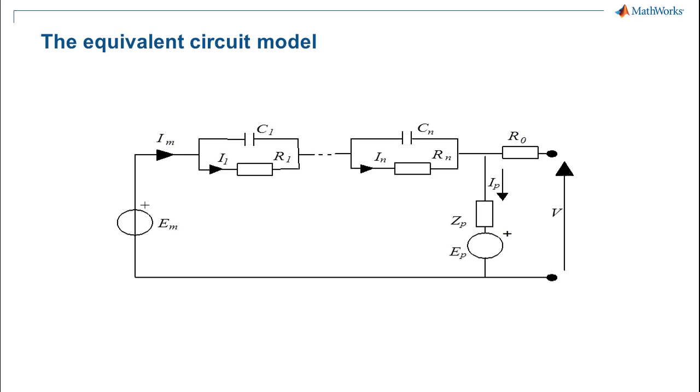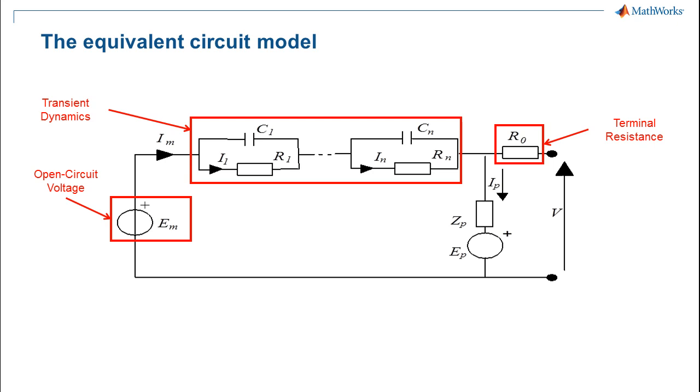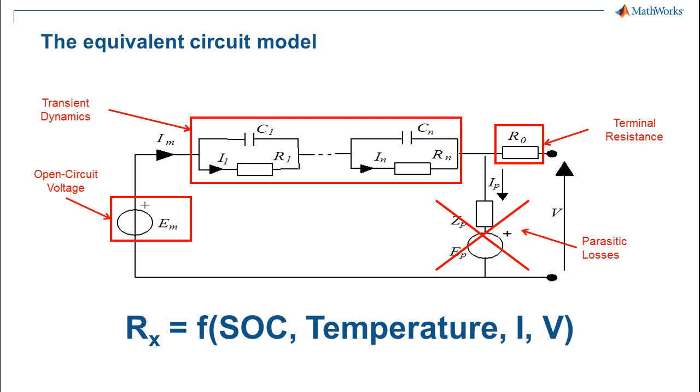Detailed equivalent circuit models are common in recent literature. They include a voltage source which accounts for the open circuit voltage of the battery. Then there's a resistor for the terminal voltage drop once a load is connected. A network of one or more RC branches accounts for the time constants and frequency response of the battery.